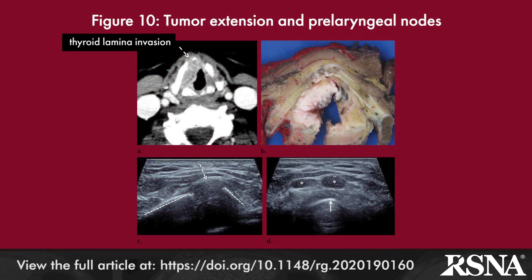Ultrasound can be a useful adjunct to pretherapeutic staging in laryngeal carcinoma, as it can detect the presence or absence of cartilage invasion, augment the detection of submucosal disease, and identify subtle extra-laryngeal extension not visible by CT or MRI.